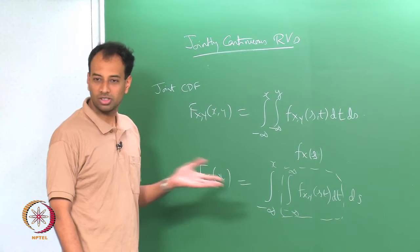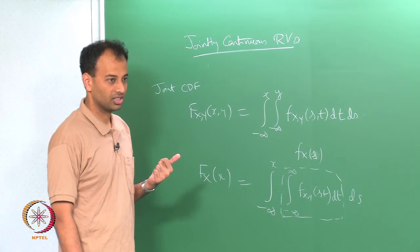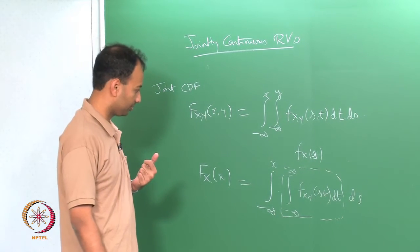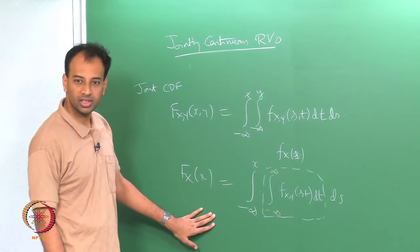So what this essentially says is that if x and y are jointly continuous, then x and y are separately, marginally, also continuous random variables. The converse of course is not true — we gave an example yesterday.